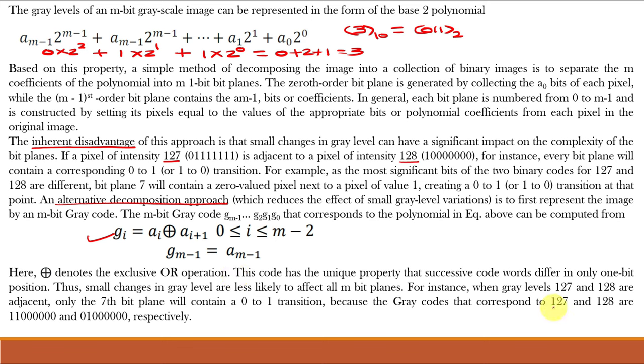Now we can see that after application of gray code, 127 and 128 just differs by one bit. So our problem of discontinuous pattern is solved. And now each plane can be compressed further using run length coding or other compression technique.